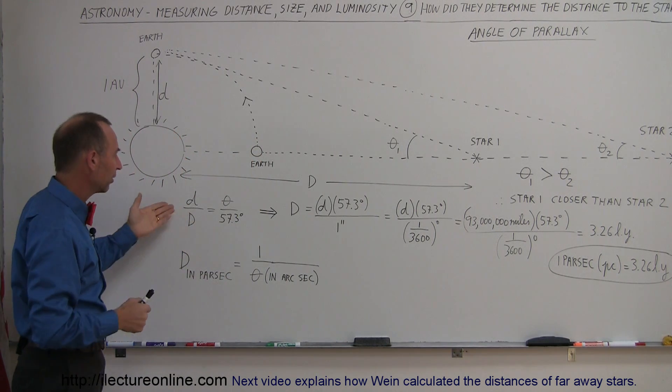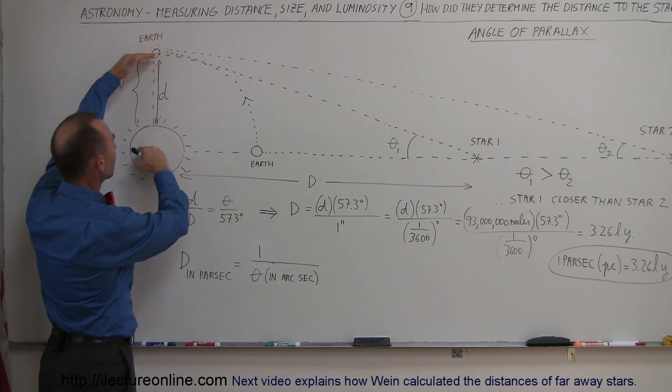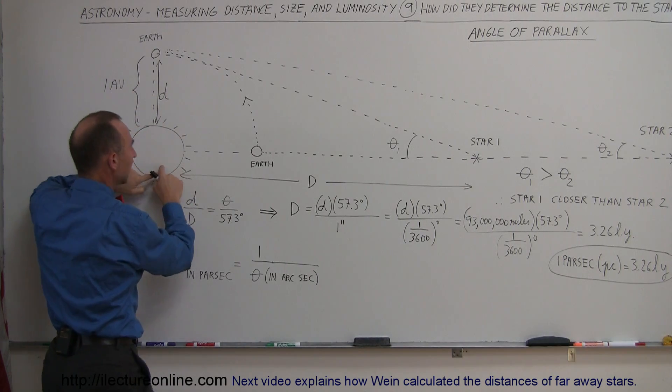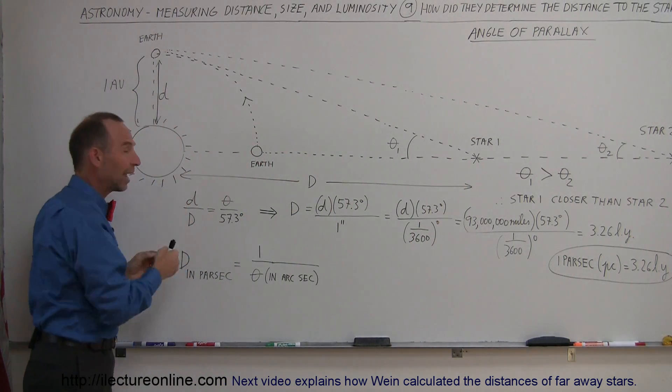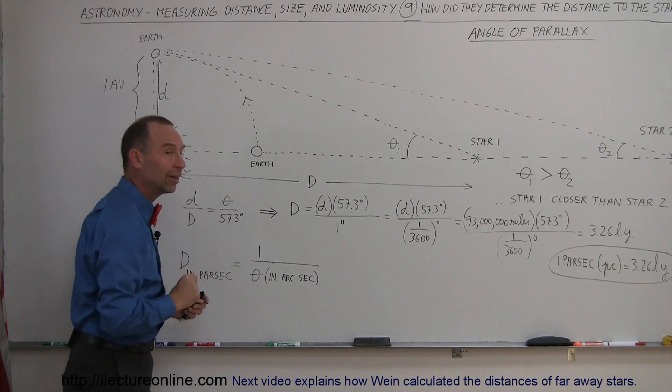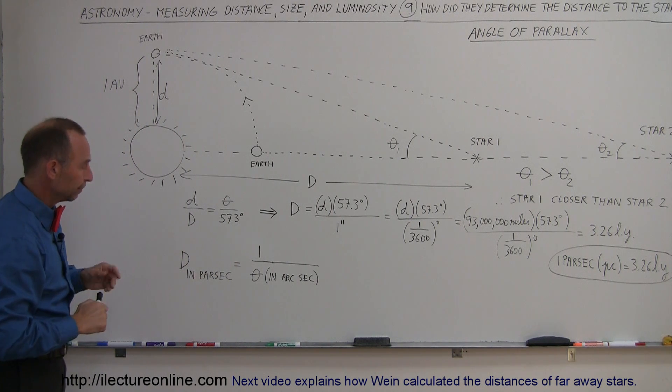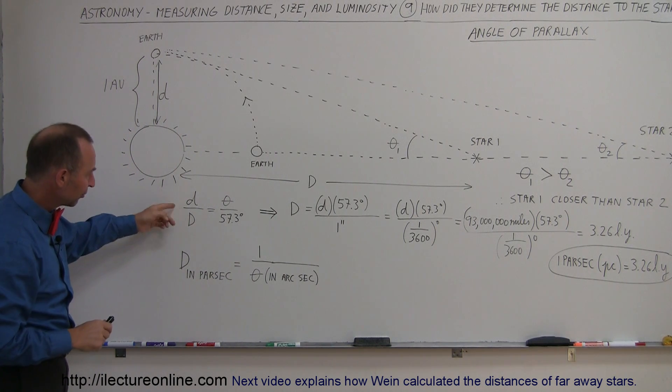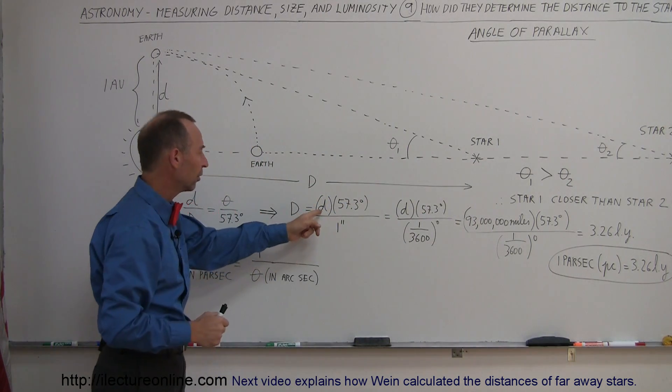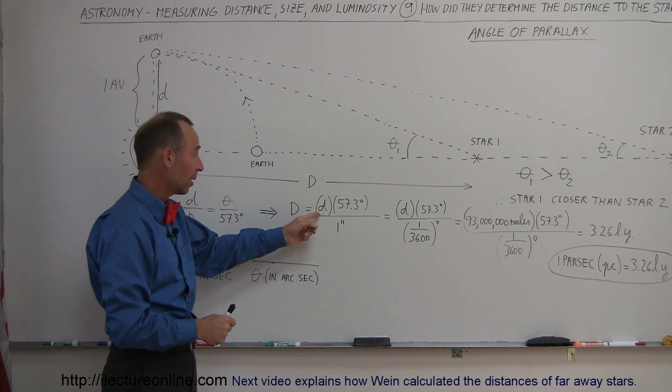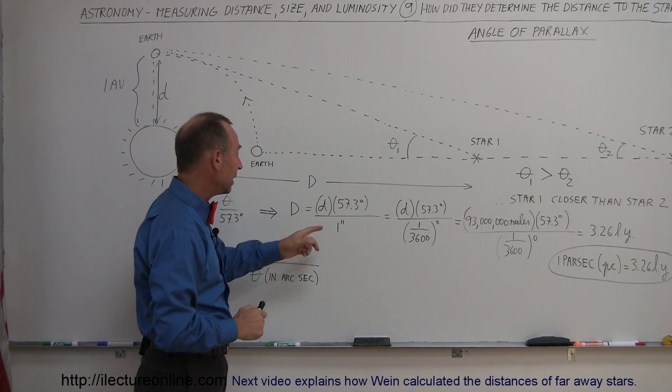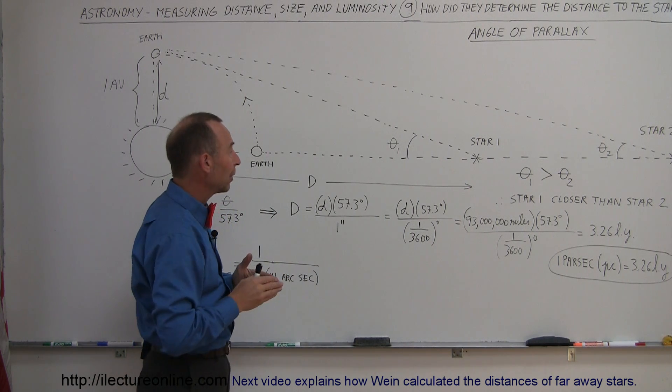How did they do that? Well, it's that very same equation again. This distance right here - because you're seeing this is basically a triangle - so the distance of the base, small d, and then this distance right here called large D, the ratio of that would be equal to the angle right here divided by the number of degrees in a radian. So if we solve this equation for big D, which is what we're looking for, we're looking for the distance to the star. That would be equal to the distance between the Earth and the Sun, which is one astronomical unit or 93 million miles, then we have the number of degrees in a radian, and we divide that by the angle that we have measured.